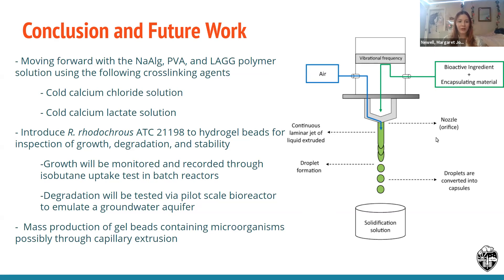We are also interested in mass production of the gel beads containing the microorganisms. A possible option is a coaxial capillary extrusion gel bead generator, which we have available in our polymers lab. The system is flexible, so making alterations to align with our research shouldn't be an issue, and it can produce 100 beads per minute or higher depending on the size of the bead, which we have an example of on the right.